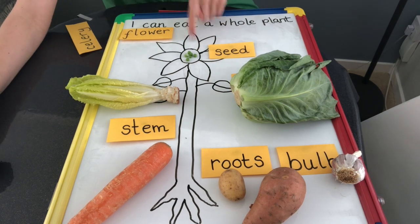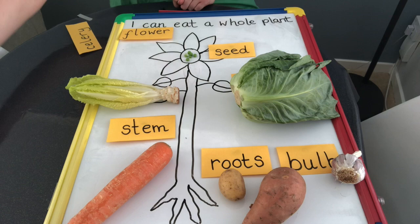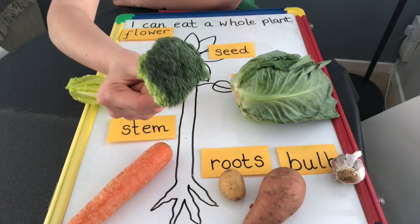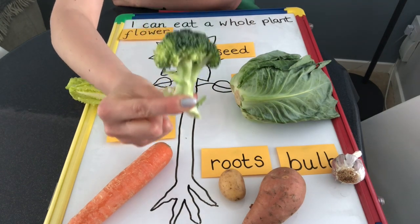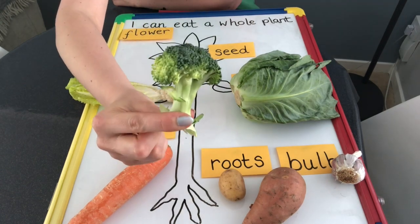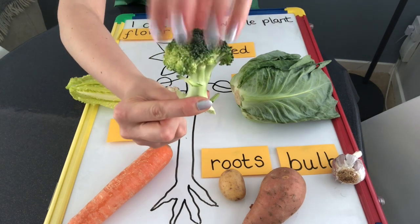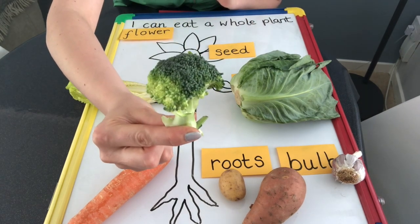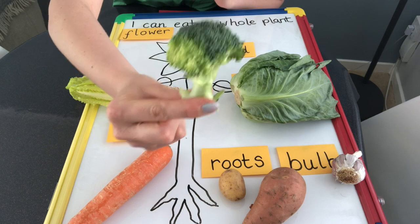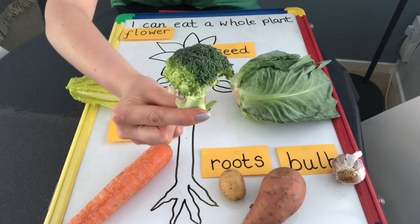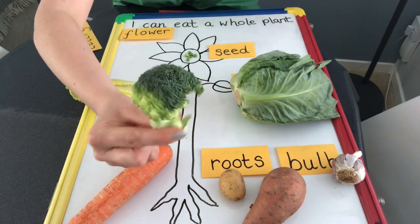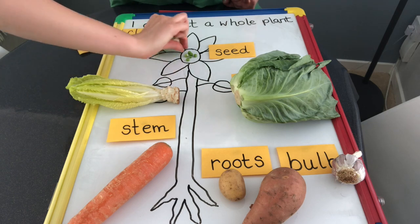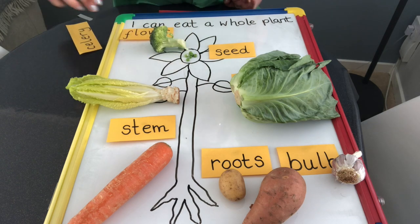And right at the top we've got the flower. Did you know that the top of the broccoli — the florets up here — that's called the flower? And it's the same for a cauliflower as well. So this bit is the flower of a plant. So there is my flower.